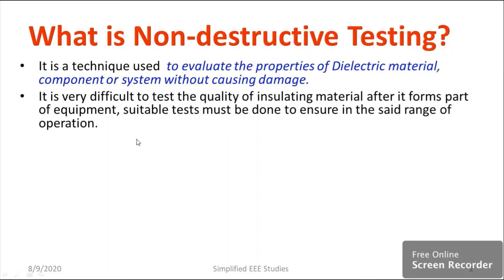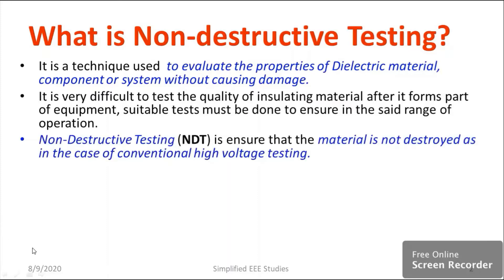Consider a high voltage transformer — if it becomes part of a high voltage system, it is very difficult to do the insulation test. One of the most important peculiarities of NDT is that the material is not destroyed, as in the case of conventional high voltage testing. In conventional testing, obviously the material will be spoiled after one or two tests. But in the case of NDT, the material will not be spoiled, as we consider only a test sample. That's a speciality of NDT.